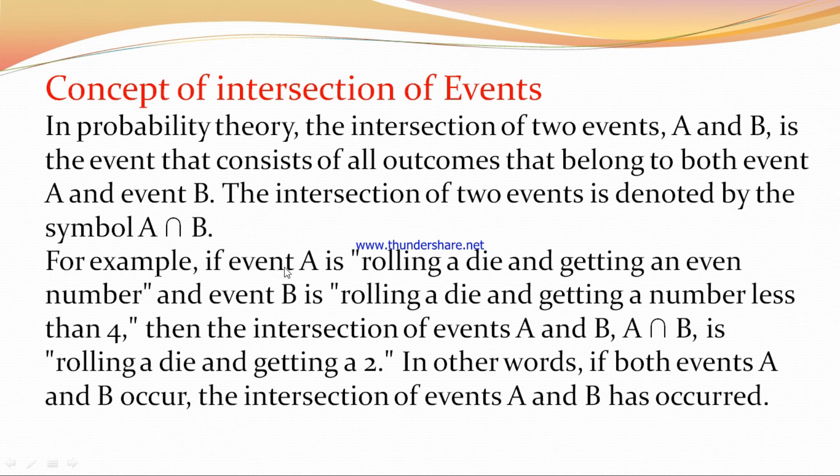For example, if event A is rolling a die and getting an even number, and event B is rolling a die and getting a number less than 4, then the intersection of two events A and B, A ∩ B, is rolling a die and getting a 2.